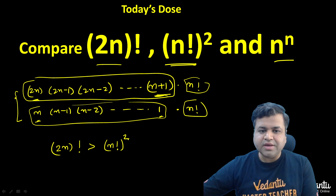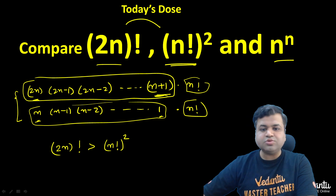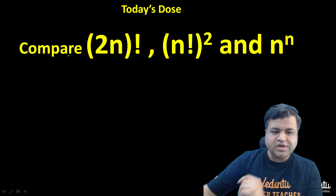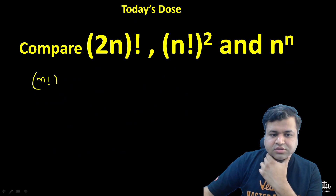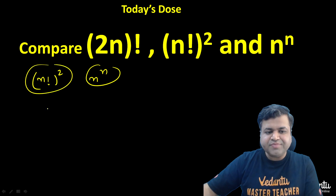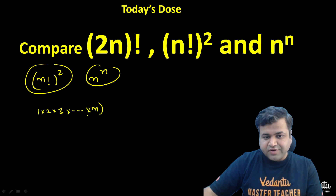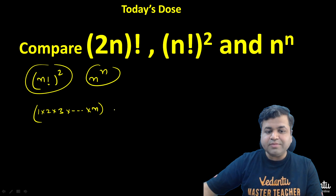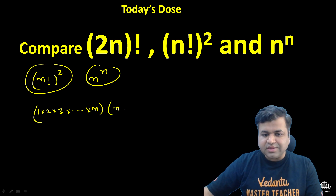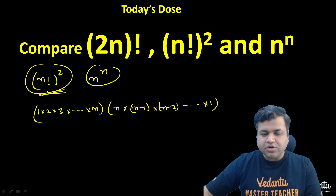So we have established (2n)! > (n!)². Now let's compare (n!)² and n raised to the power n. We write (n!)² as n times (n−1) times (n−1) times (n−2) and so on till 1. This is our (n!)².